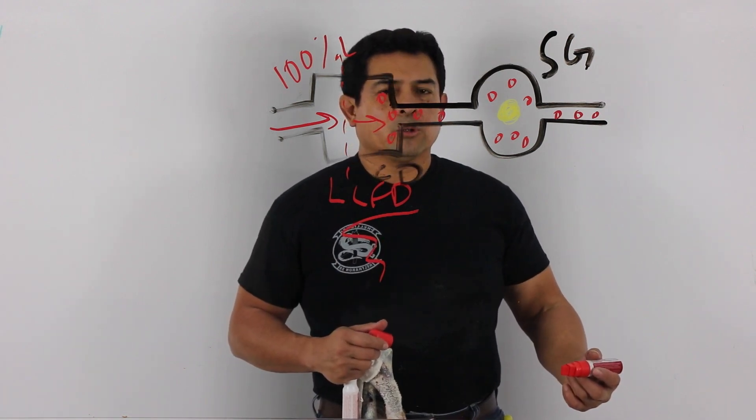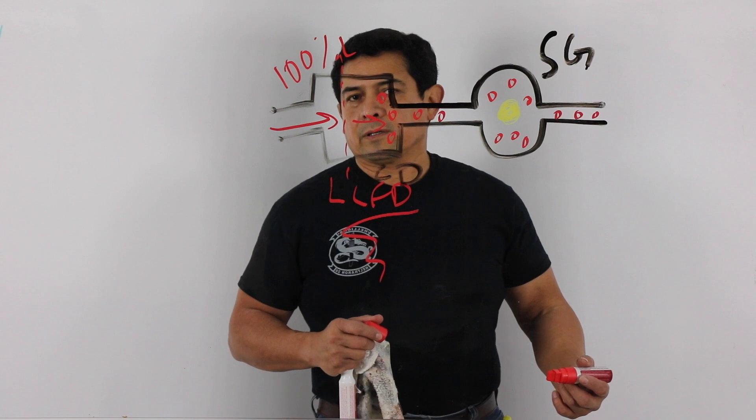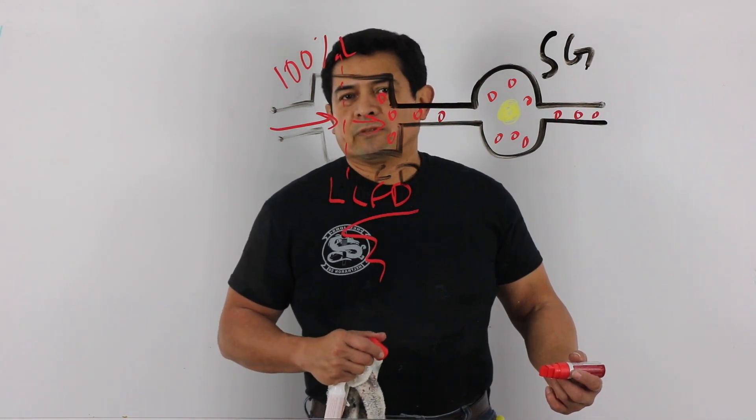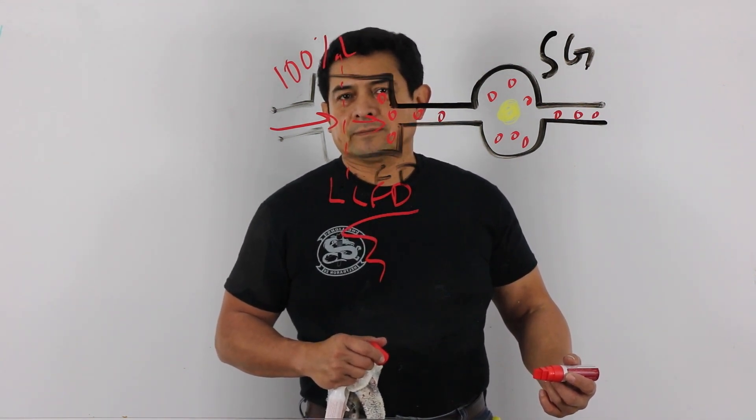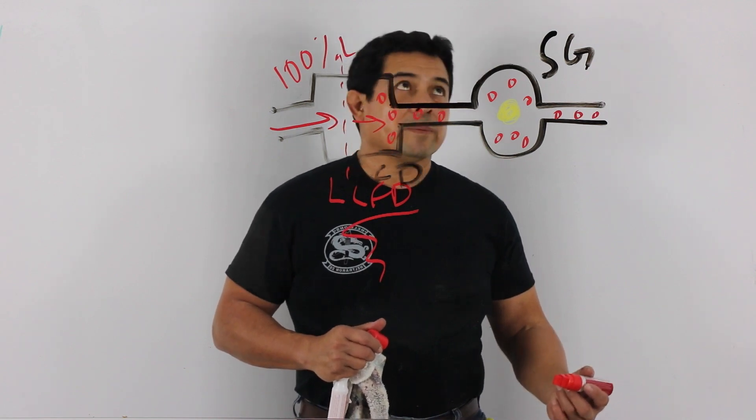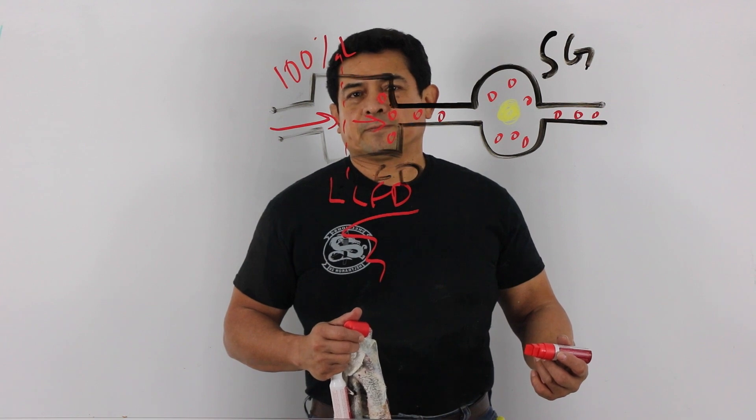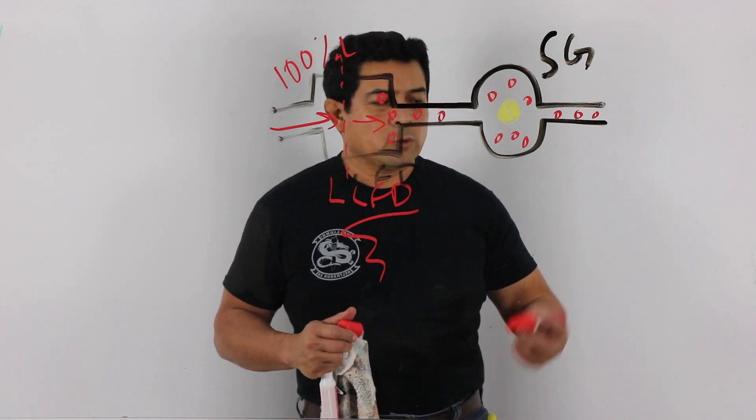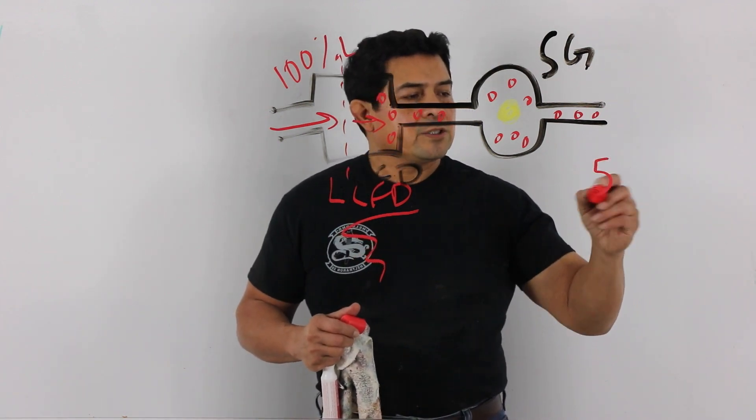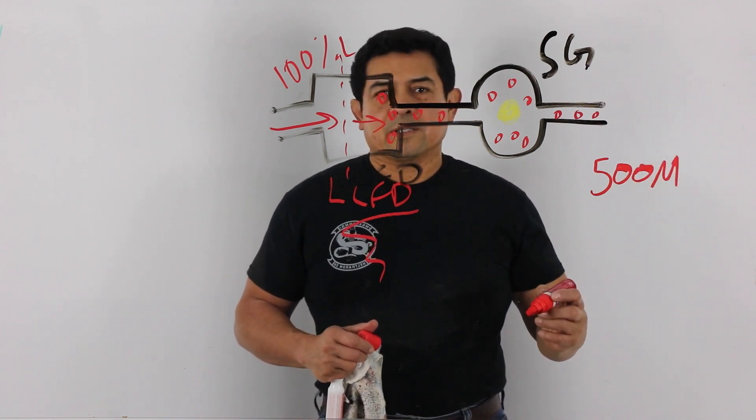How long? Some mechanics say 10 minutes, 20 minutes, 30 minutes. It depends. Well, guess what? The time doesn't matter. It doesn't matter how long you pull it for. What's important is that you get down to 500 microns.